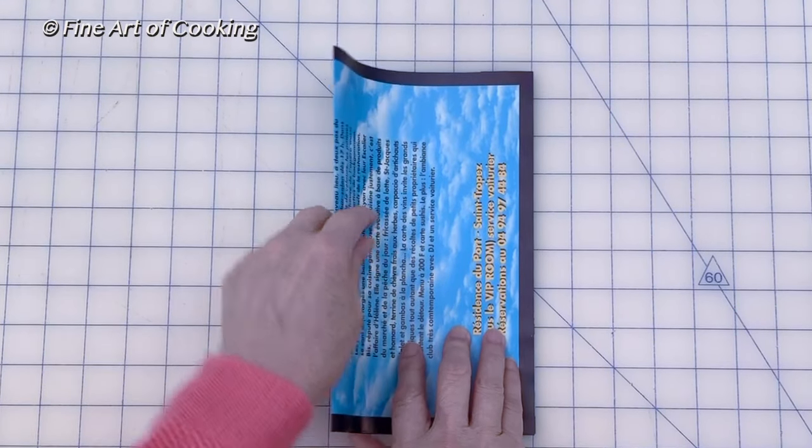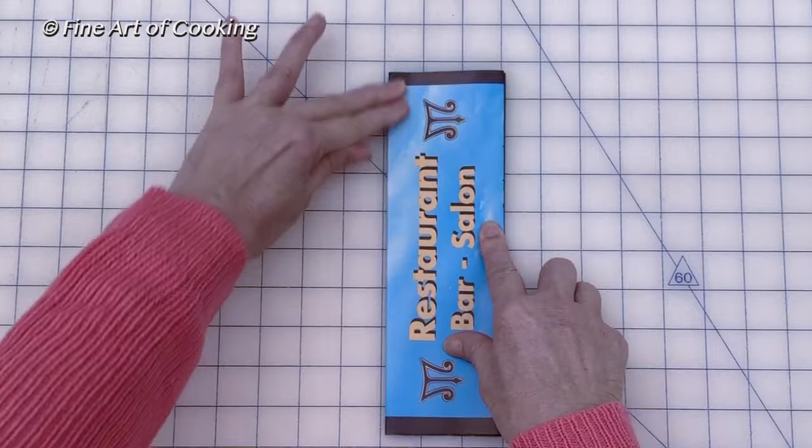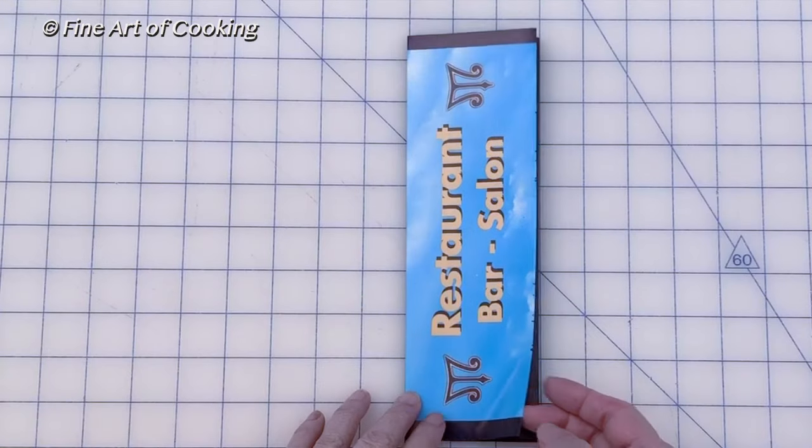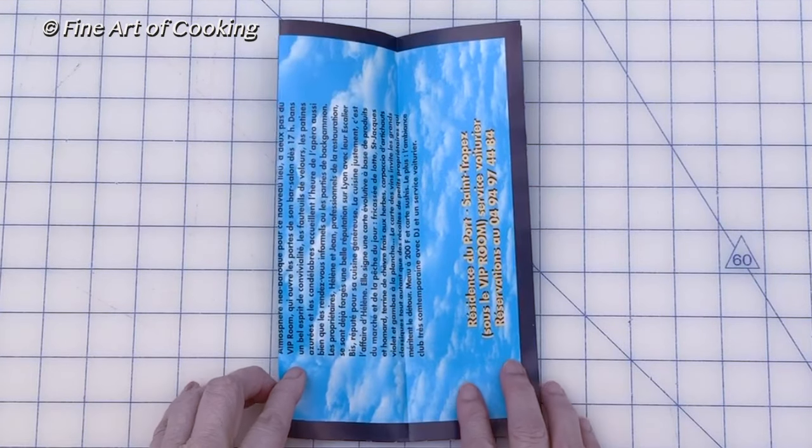Then fold the paper in half again to create a crease. Now unfold and review the crease.